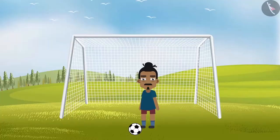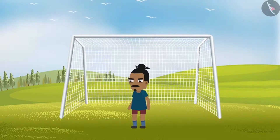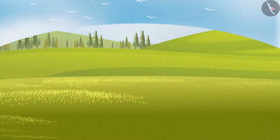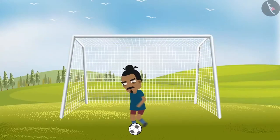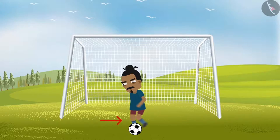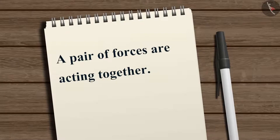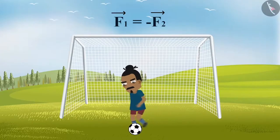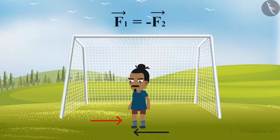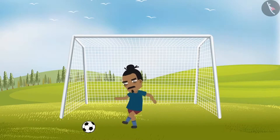To understand the third law better, consider the situation of a footballer kicking a football. The ball moves once it is kicked, but the football also applies a force equal in magnitude on the player's leg, acting in the opposite direction. In any given situation, a pair of forces acts together instead of just a single force. These two forces are equal in magnitude, act in opposite directions, and act on different bodies. They are commonly known as action and reaction forces.